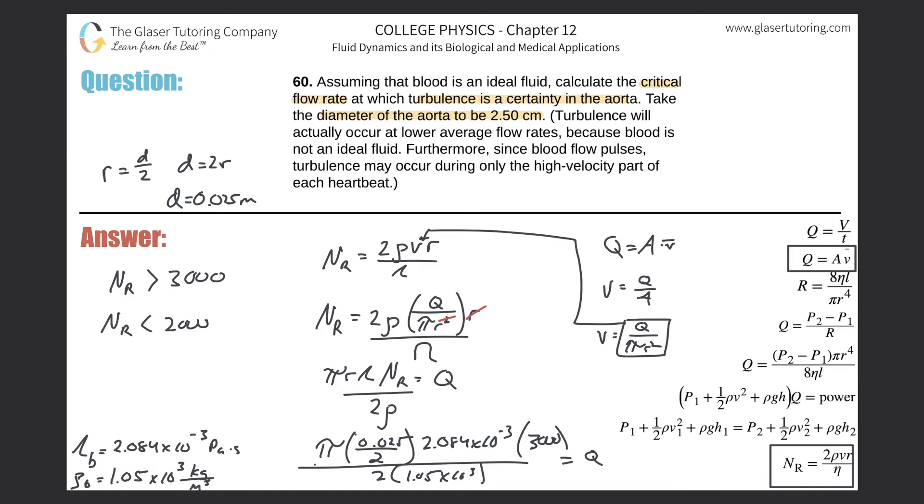Take out the calculator. π multiplied by 0.025 divided by 2, then multiply by 2.084 times 10⁻³, times 3,000, and divide all that by 2 times 1.05 times 10³.